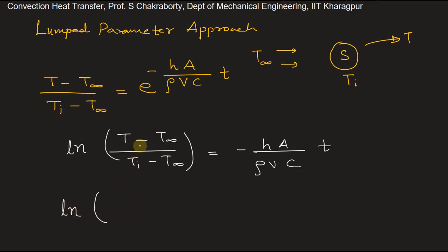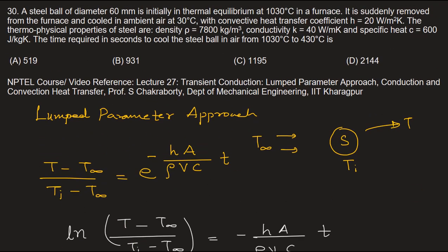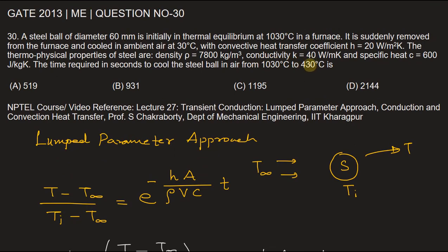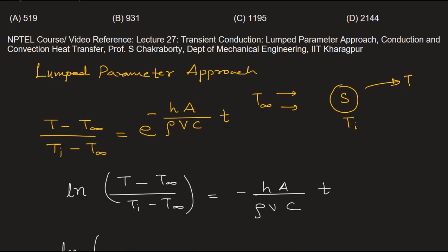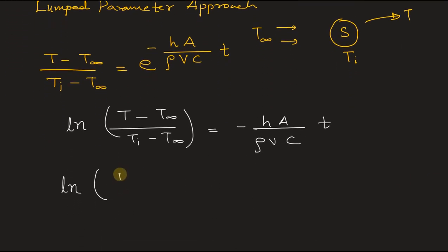Now let us substitute all the values. This is ln: T is the final temperature that we are getting, so 430 degrees Celsius minus the free stream temperature which is 30 degrees Celsius. Initially it was at a temperature of 1030 degrees. So from this initial temperature, this steel ball will approach to 430 degrees Celsius minus 30.